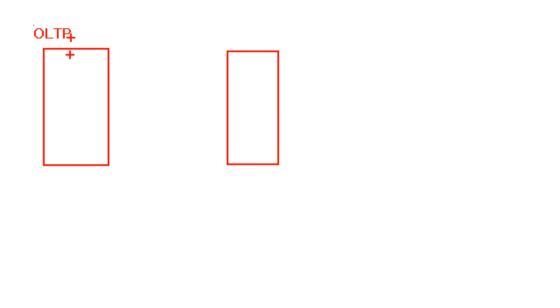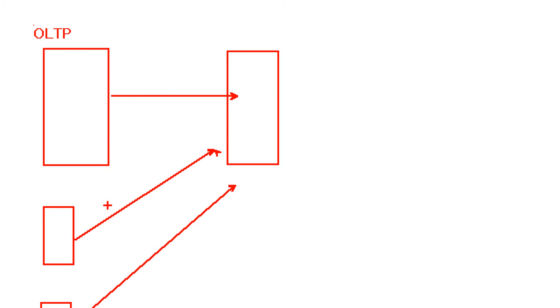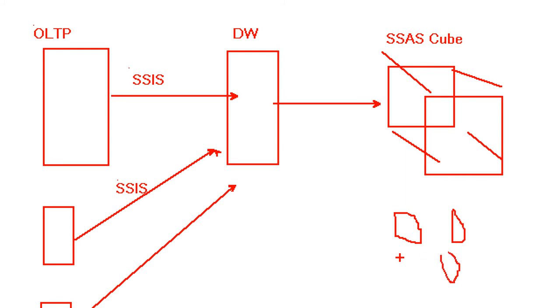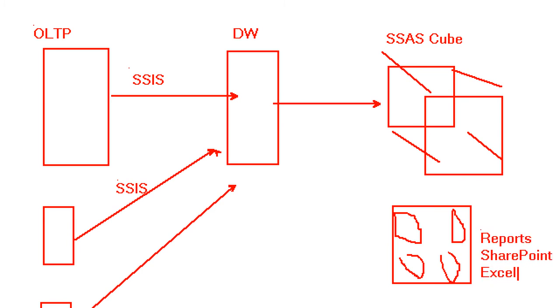In BI, we typically have our source system which replicates over to the data warehouse. We might have lots of OLTP environments, Excel spreadsheets — all replicating. This is typically SSIS or T-SQL behind the scenes to get that data in. Then data goes into a cube, and we have a reporting environment with SharePoint and Excel operating against this, and sometimes also going against the warehouse.